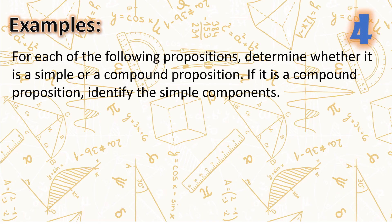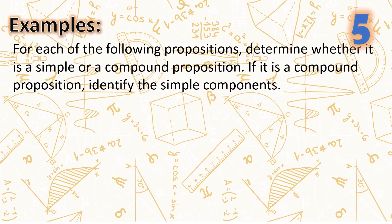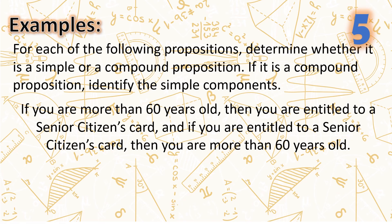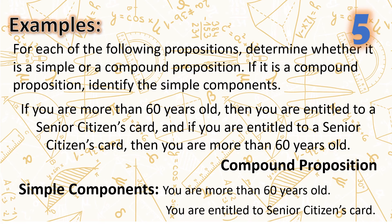Number four: 'x over (x plus 3) is a rational expression.' This is a simple proposition. Number five: 'If you are more than 60 years old, then you are entitled to a senior citizen's card, and if you are entitled to a senior citizen's card, then you are more than 60 years old.' This is a compound proposition. The simple components are 'you are more than 60 years old' and 'you are entitled to a senior citizen's card.'